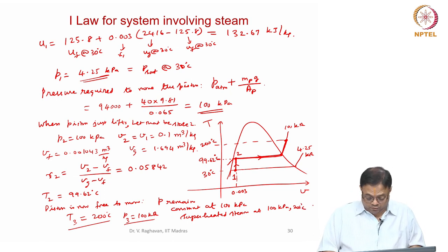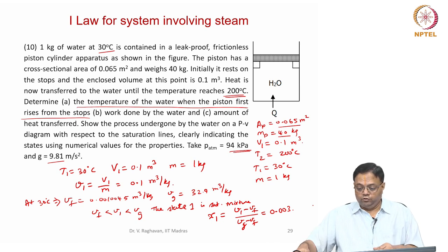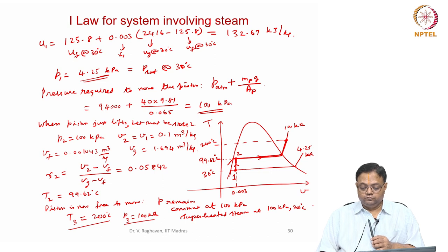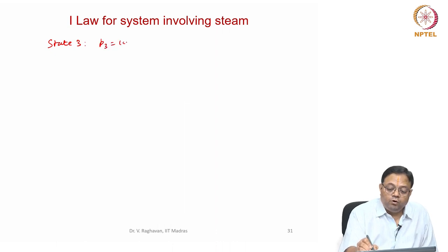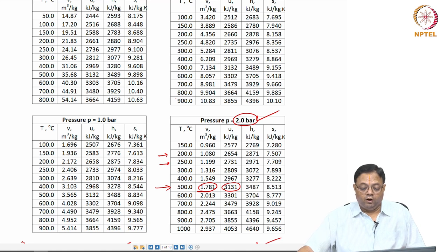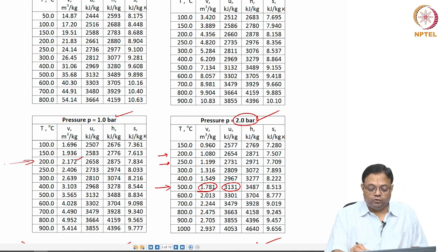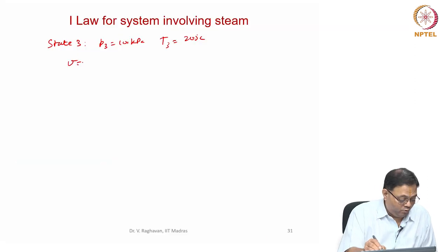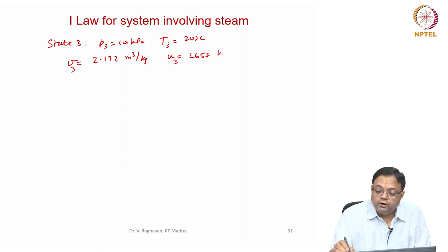Now we have to find the amount of heat transfer and work done. State 3 is fixed: P3 = 100 kPa, T3 = 200°C. From the superheated steam tables at 100 kPa and 200°C: v3 = 2.172 cubic meters per kg and u3 = 2658 kJ/kg.